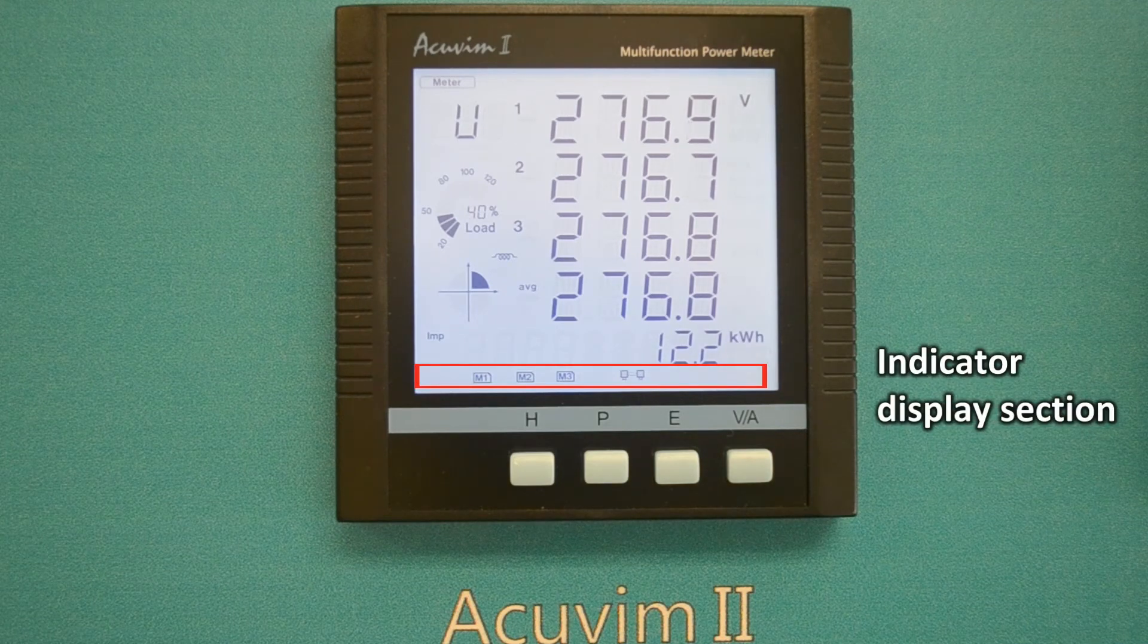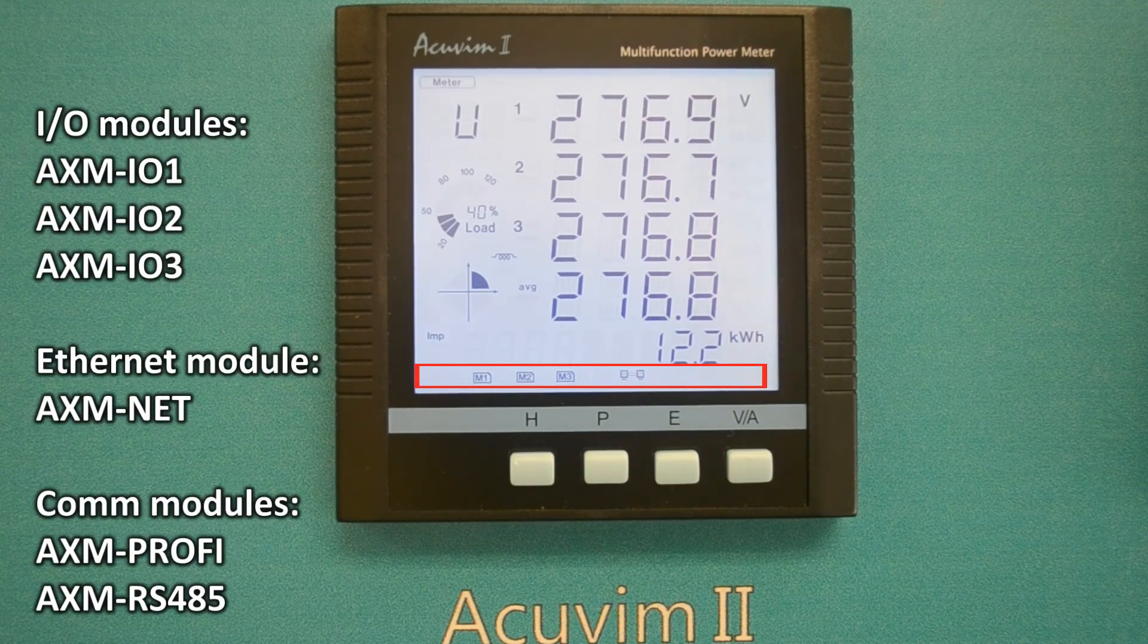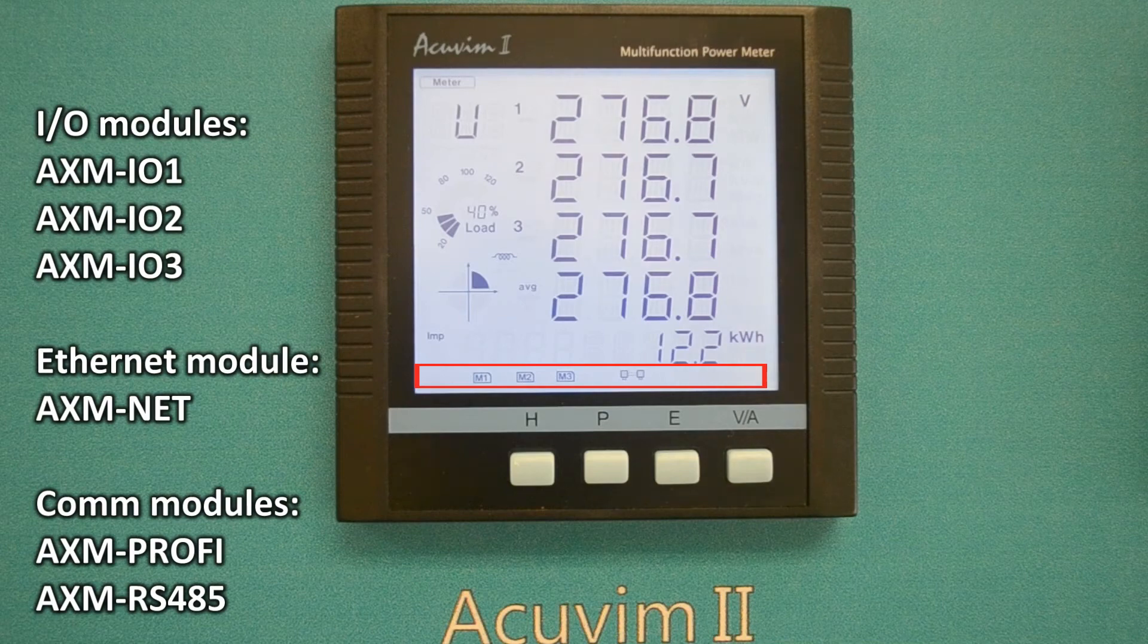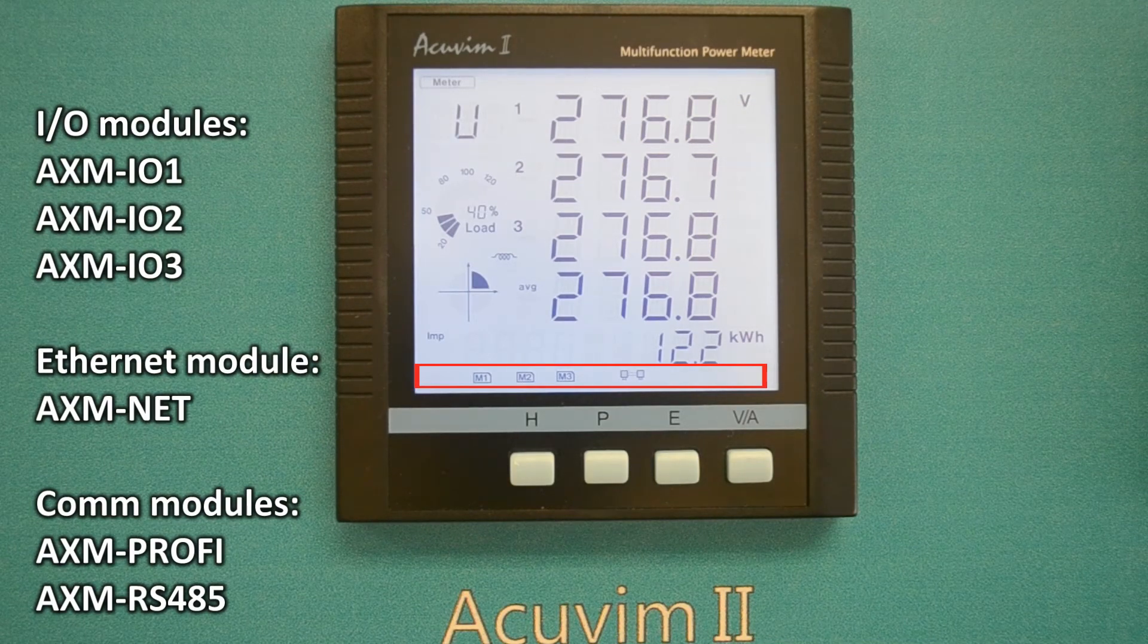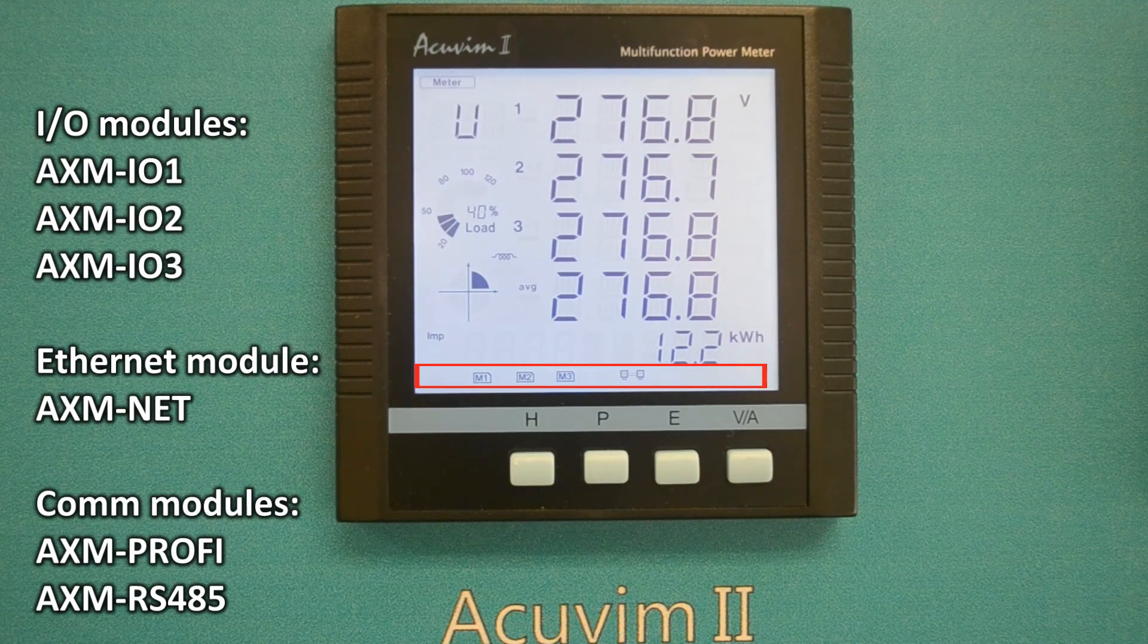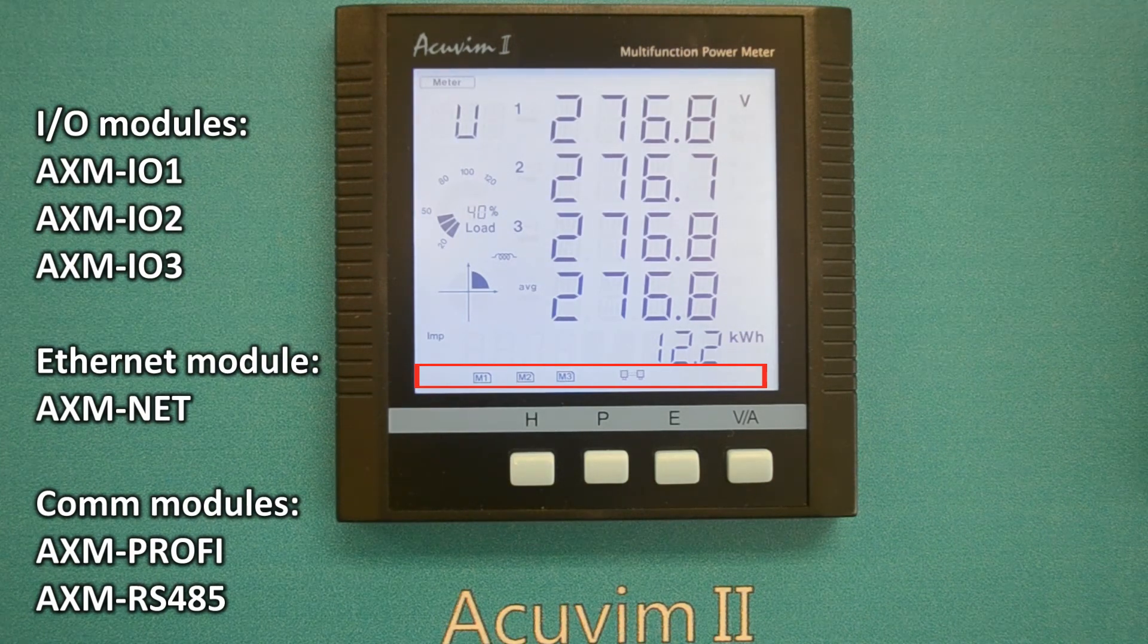In the indicator display section, you will find the I.O. and communication icons for our AXM I.O.1, I.O.2, and I.O.3 modules, as well as our AXM-Net Ethernet module.